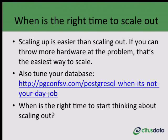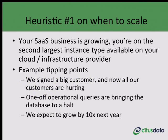With that said, if your SaaS application is growing, there will be a point where you start running into performance issues. We've seen hundreds of users and customers who look to scale out their Postgres databases at Citus. I compiled three heuristics to share — these aren't hard-written rules, think of them as general guidelines. The first one is: if your business is growing and you're on the second largest instance type available on your cloud provider, you probably want to start thinking about scaling out, because it will give you breathing room when you start thinking about scaling and sharding.